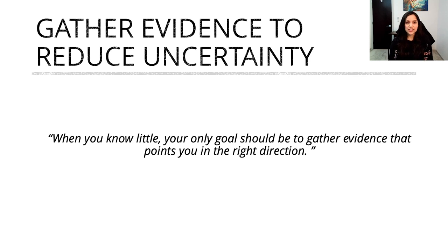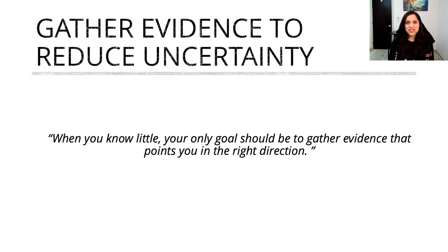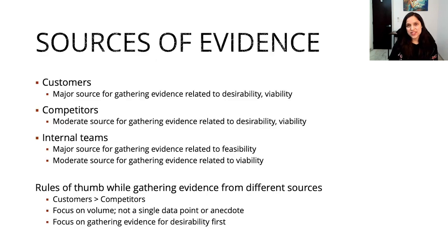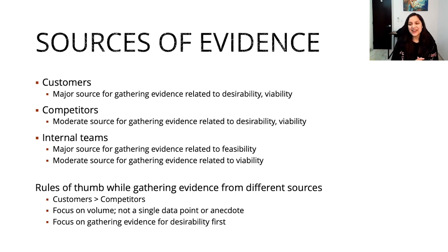When you're working with a new idea and your uncertainty is really high because you know very little, your only goal should be to gather as much evidence as you can that points you in the right direction. There are three major sources of evidence: customers, competitors, and internal teams. Each of these sources will give you varying degrees of information about desirability, feasibility, and viability. Depending on which uncertainty you're trying to minimize, you might want to pick the best source or sources to gather more evidence.